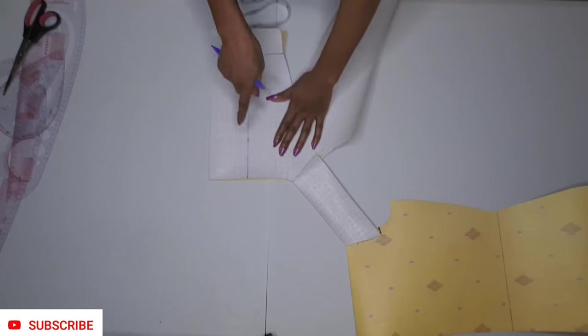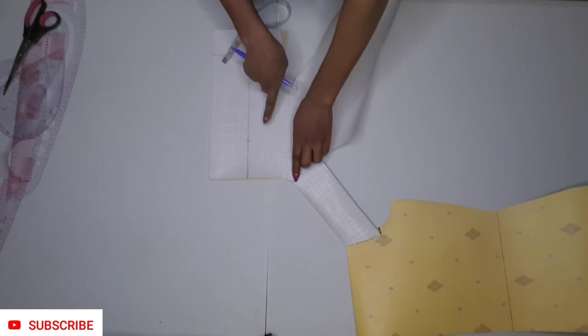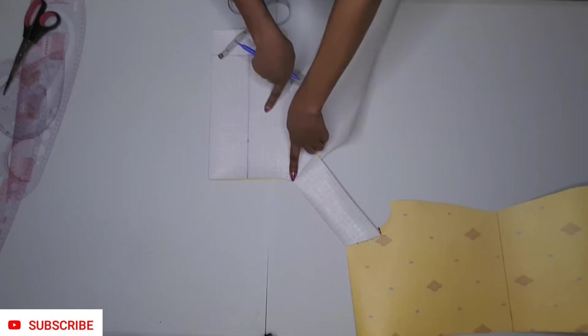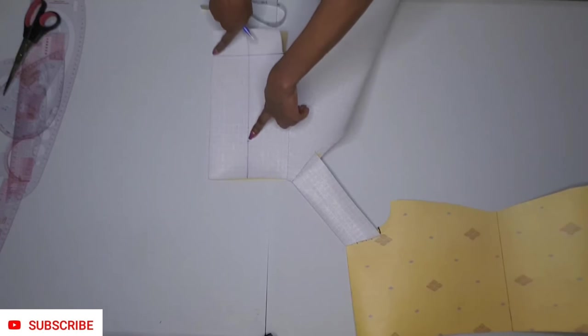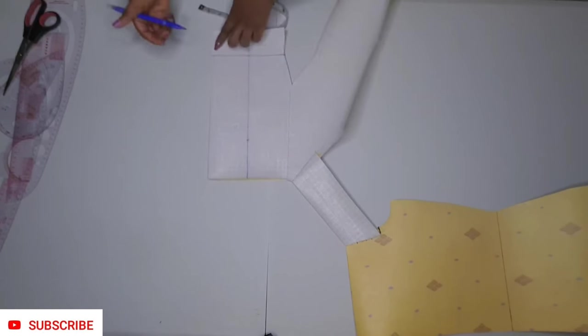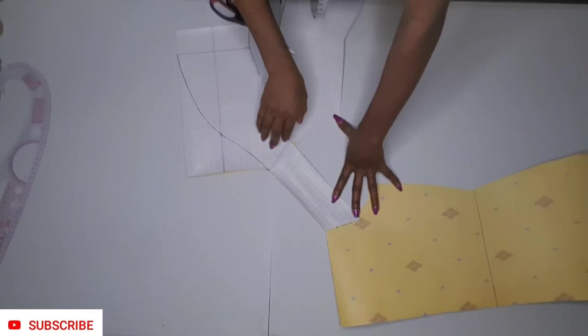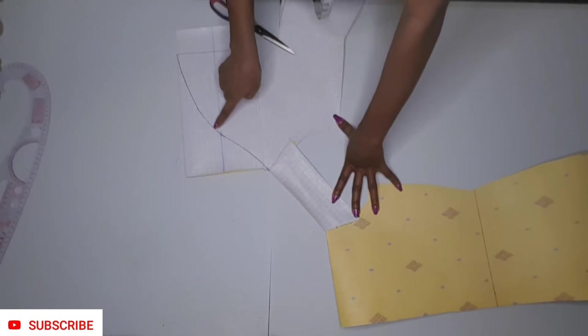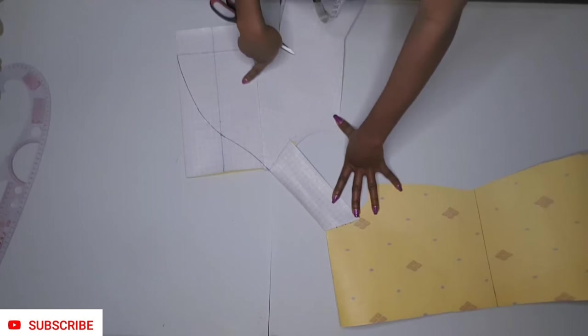From this point now, you are going to connect from where your sleeve meets with the armhole to that point and down to your waistline. You are going to be connecting that with a curve, like I have done.